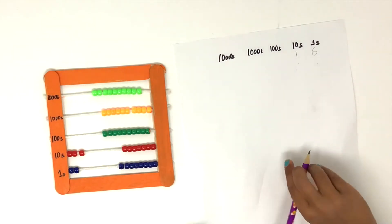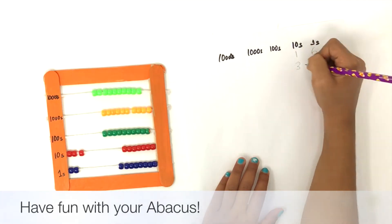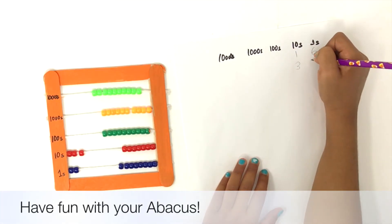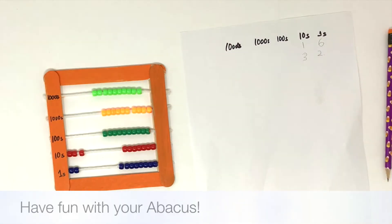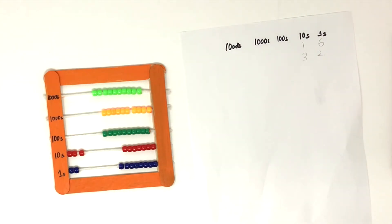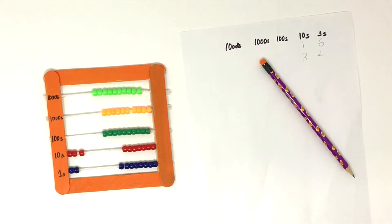We made the number. What number did we make? What number is in the tens place? Three. What number is in the ones place? Two. We made 32, which is 16 plus 16. Great job! Now try doubling 32 on your own. Have fun with your abacus! Bye bye!